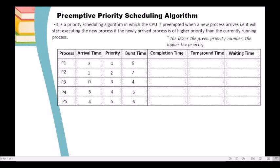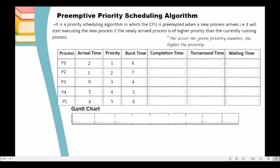Let us now create a Gantt chart for us to be able to see when a particular process gets the CPU time for its execution and when it finishes. In the Gantt chart, we are going to start from time 0. At this unit of time, we check which process arrives in the ready queue. We refer to our table — we have P3 which arrives at time 0.